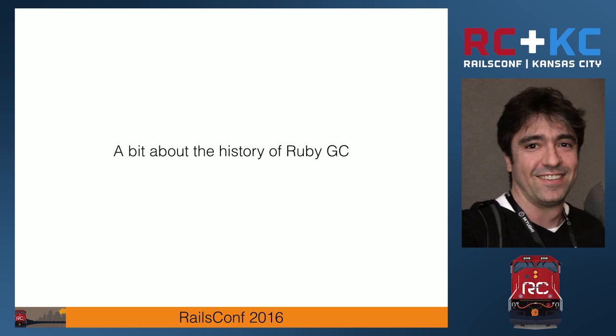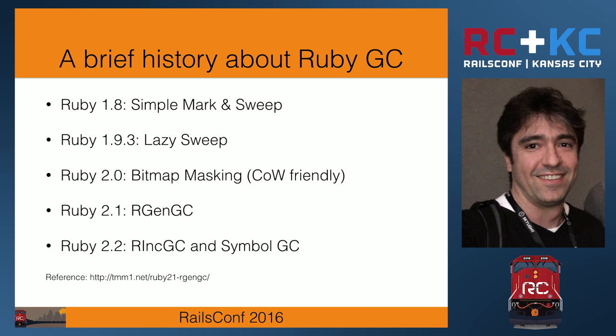That's interesting. At one of the meetups I did in DC, I think one guy in the room had done it, but it was a much smaller room anyway. This part of the presentation has a lot of information. I don't expect you to follow everything or get everything in your mind. I'm only going to glance through these algorithms and not explain them in detail, but if that's something you get curious about, let me know — there's a lot of documentation I can point you to. Basically: 1.8 is simple mark-sweep; 1.9.3 is lazy sweep; 2.0 adds bitmap marking; 2.1 is the generational GC; and 2.2 comes with the incremental GC and symbol GC.